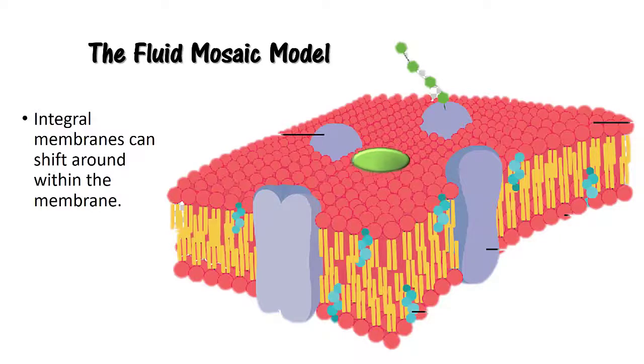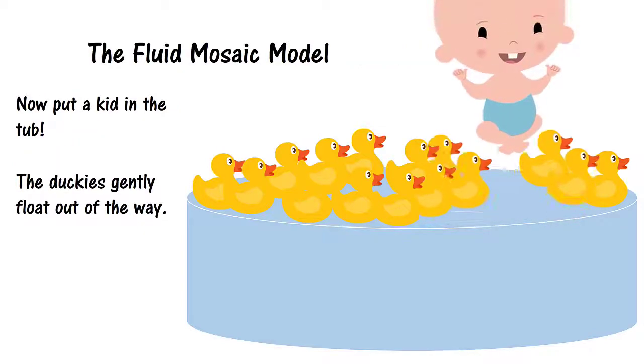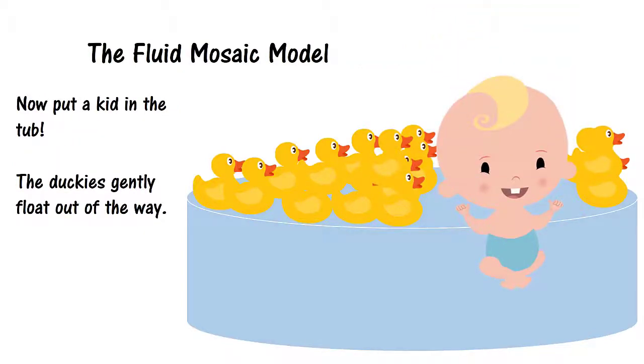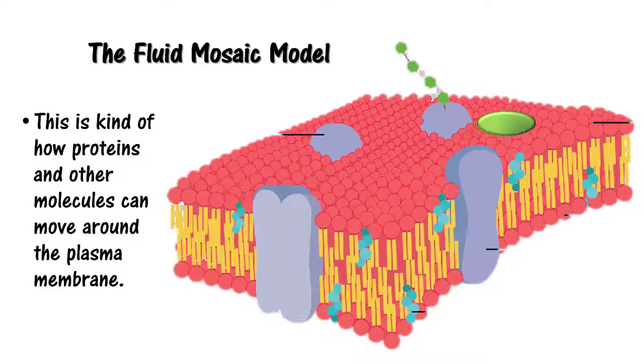Integral membrane proteins can shift around within the membrane. Think about a tub full of rubber duckies. The rubber duckies float on top of the water in a mono layer. Now, put a kid in the tub. The duckies gently float out of the way. The baby can freely move around the tub, and the duckies will move around to allow that movement.